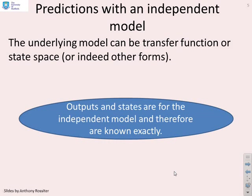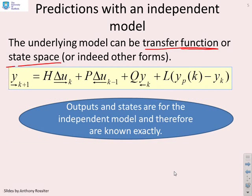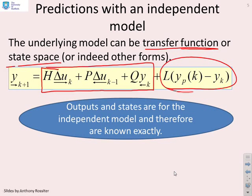The underlying model could be transfer function, or it could be state space, or it could indeed be any form you like. If it was transfer function then, I would have a model prediction, which is the bit I've just put in the red box there. And you'll say, yeah, that looks just like the Karima model predictions I did earlier in this chapter. But I add to it this correction term, this offset term.